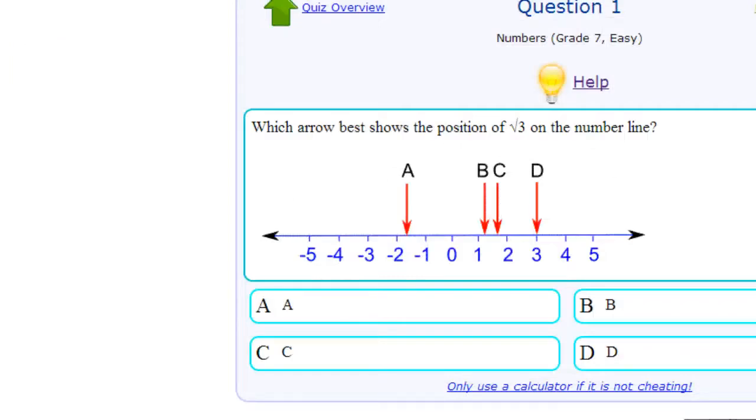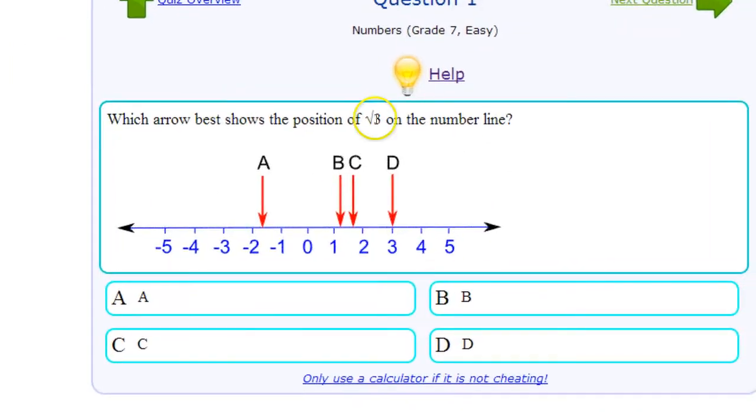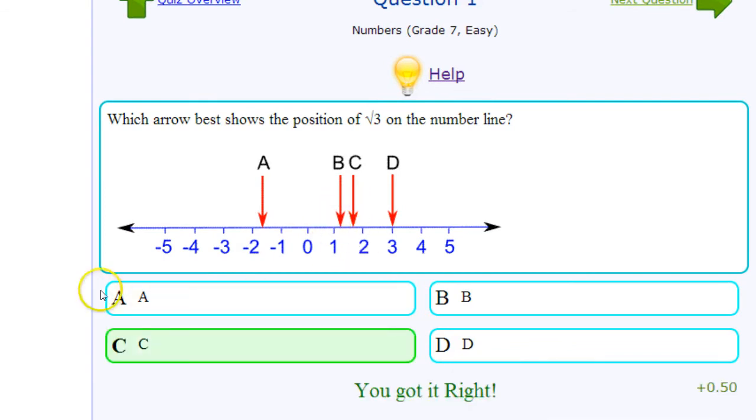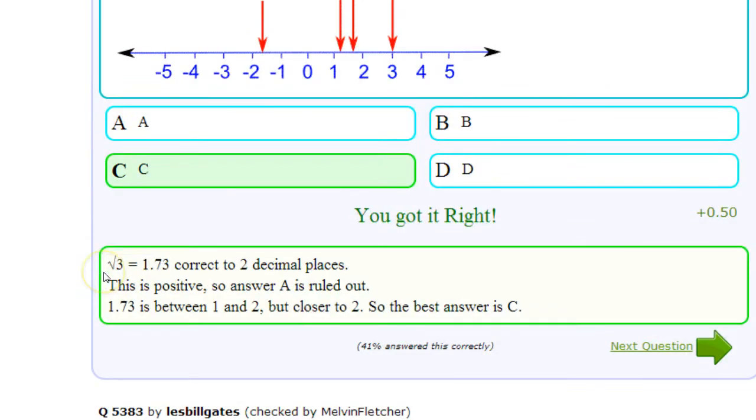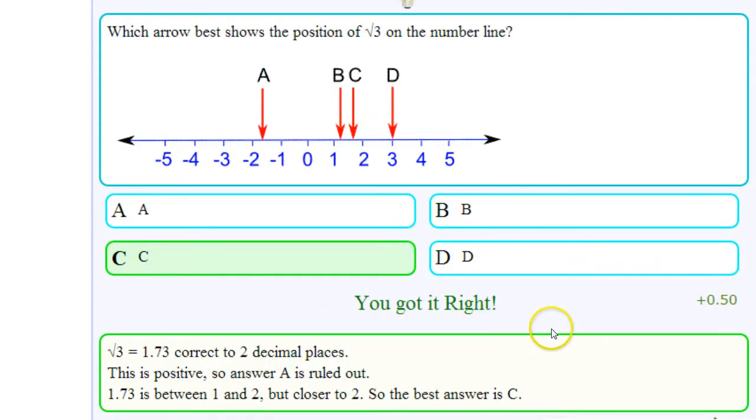So we go back and we're looking for about 1.73 and that looks to be about where C is because it's closer to 2 than B is. So we choose it and we got it right. The answer is positive, so we ruled out A. 1.73 is between 1 and 2 but closer to 2, so the best answer is C.